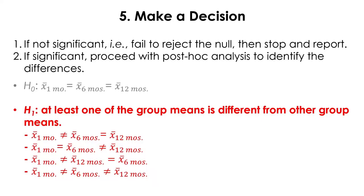So now we can make a decision. The decision rule is still the same: if not significant, you fail to reject the null of no difference and report there is no effect of the diet pill. However, because our result was significant, we need to proceed with post-hoc analysis to identify where the difference is coming from, since we do not yet know which specific time periods differ.